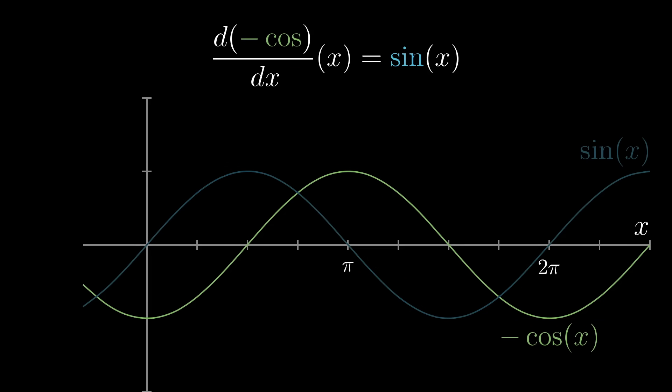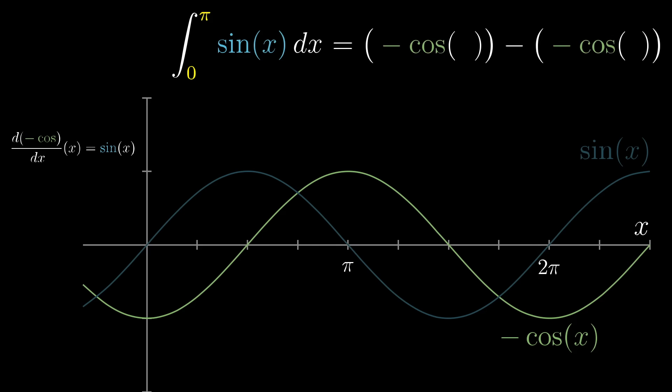So what do we have to do to evaluate the integral of sine between zero and pi? Well, we evaluate this antiderivative at the upper bound, and subtract off its value at the lower bound. More visually, that is the difference in the height of this negative cosine graph above pi, and its height at zero. And as you can see, that change in height is exactly two.